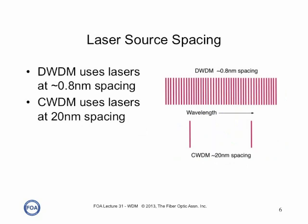The wavelengths used in DWDM and CWDM are quite different. Because DWDM has so many different channels, the lasers are spaced at 0.8 nanometers — less than one nanometer — and the stability of these wavelengths requires using expensive DFB lasers. Coarse wavelength division multiplexing uses lasers at 20 nanometer spacing, so it's much less critical on the wavelength of all the different lasers.